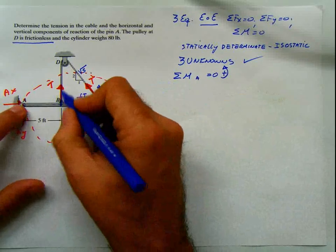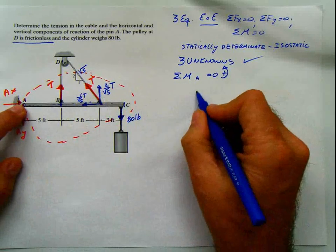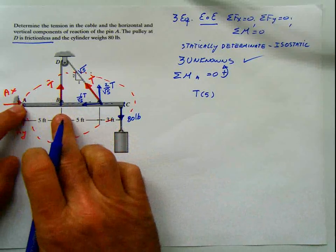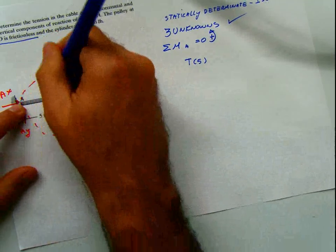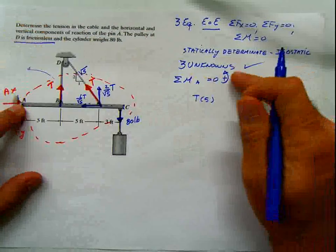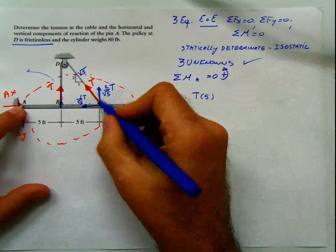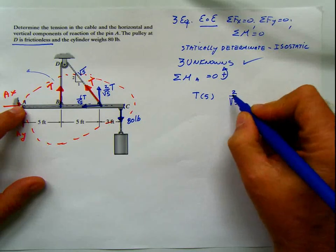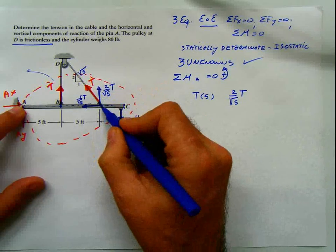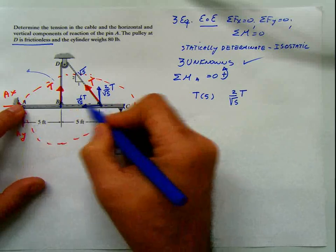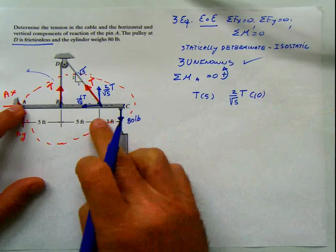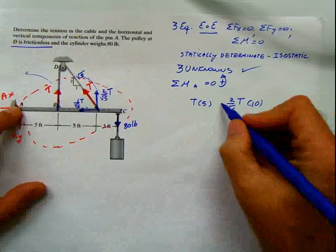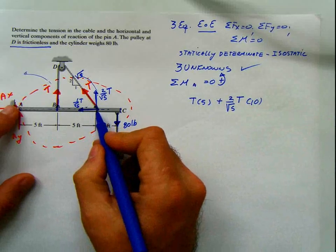Once we have that, we can proceed. The first force is the vertical T at the end, the force is vertical and the distance has to be horizontal, which is 5. If I apply this in this direction, the moment is acting counterclockwise, which according to my convention is positive. For the vertical component of the tension at D, it is 2 over root-5 times T, multiplied by the horizontal distance of 10. The moment is counterclockwise, so that is also positive.